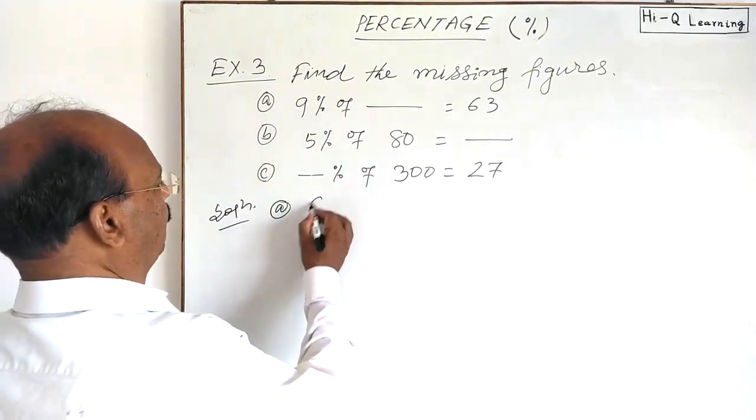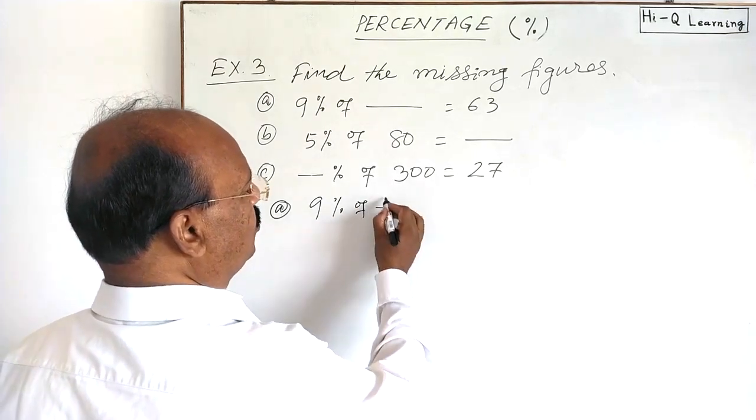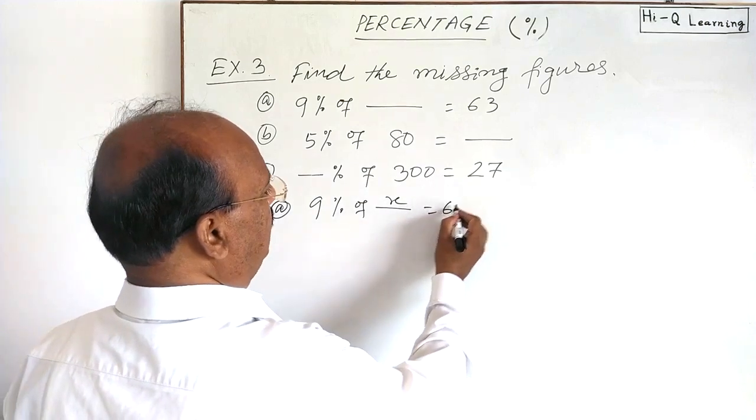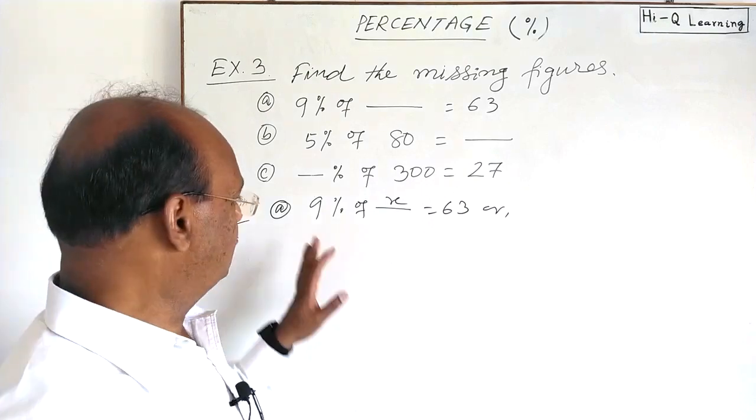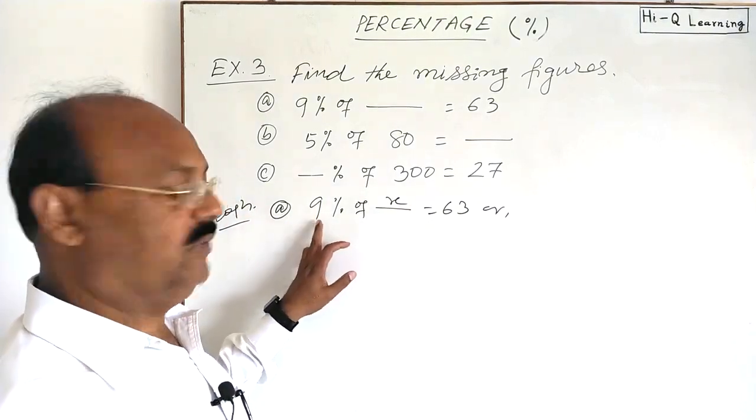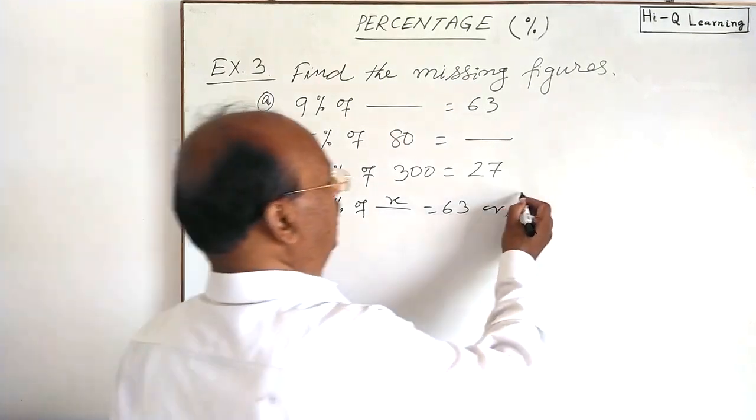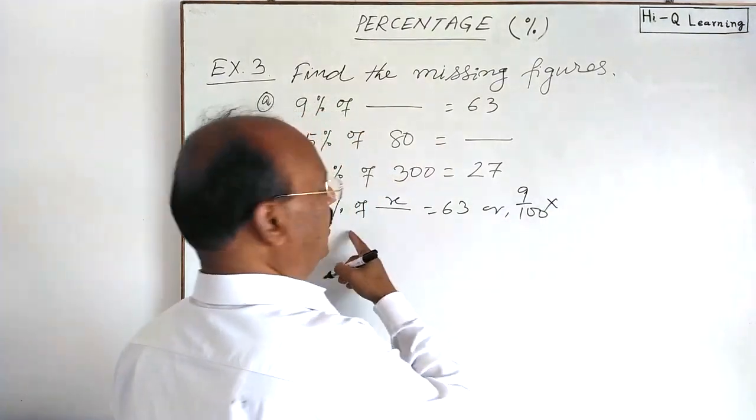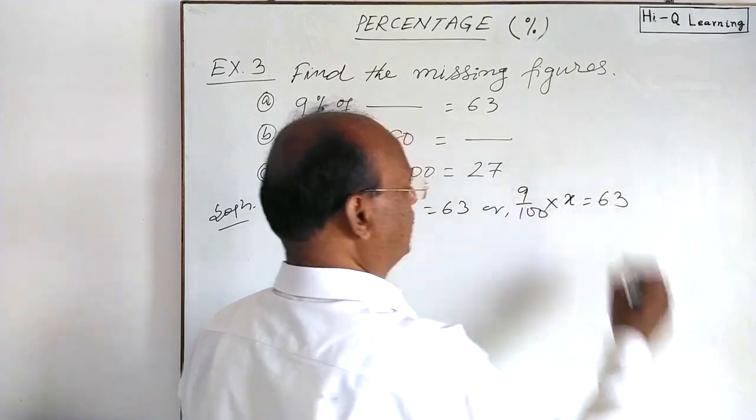So 9% of x equals 63. As we discussed in previous videos, percent means hundredth part of a number. So 9% means 9/100. 'Of' means multiplication, so 9/100 × x = 63.